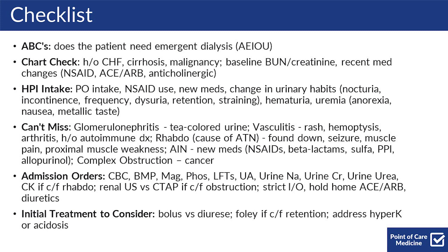As a checklist when you're admitting a patient with an AKI, of course always start with the ABCs. Think: does this patient need emergent dialysis — AEIOU, which we'll talk about later. As a chart check, look for a history of comorbidities including CHF, cirrhosis, and malignancy.